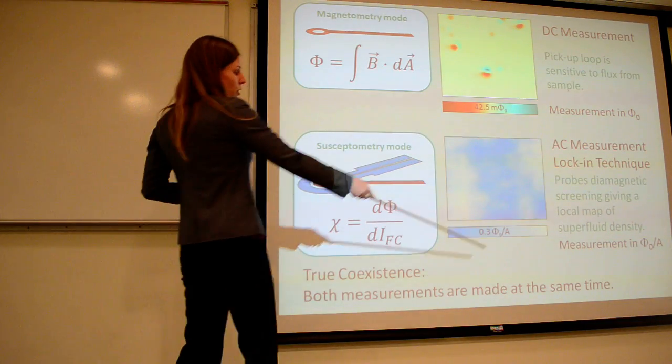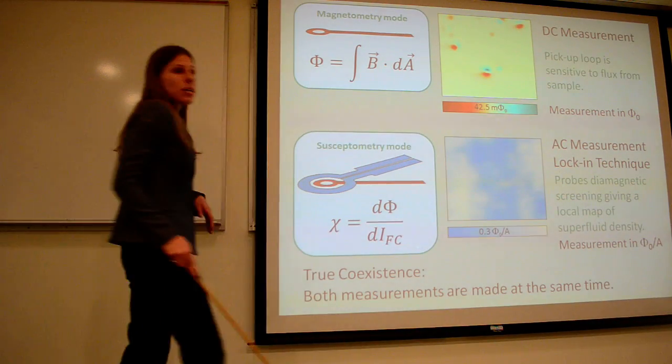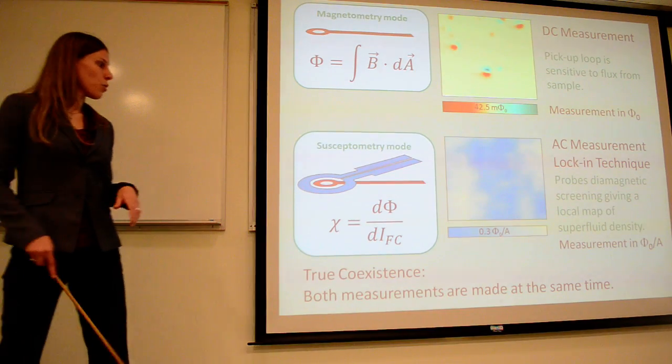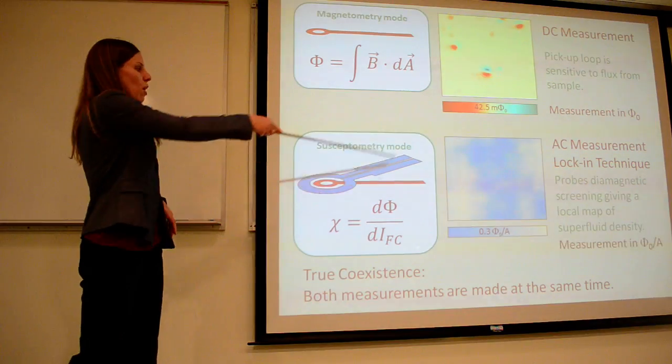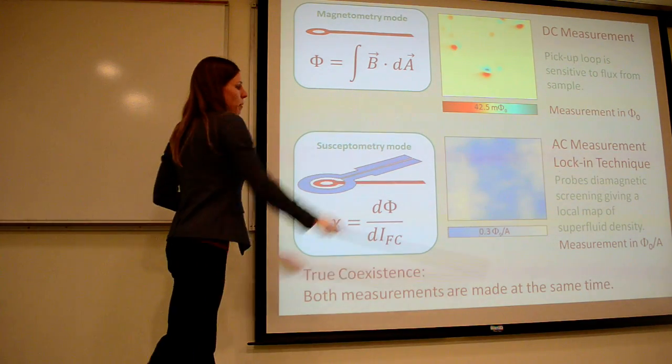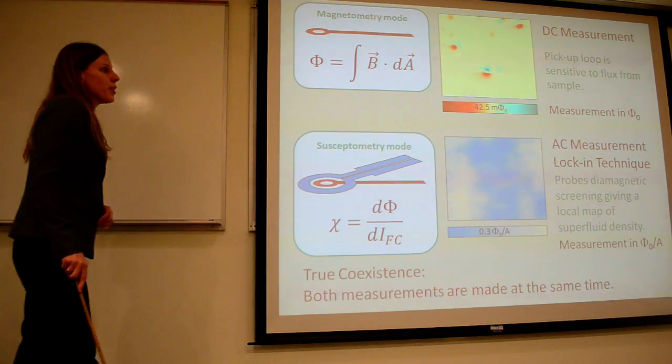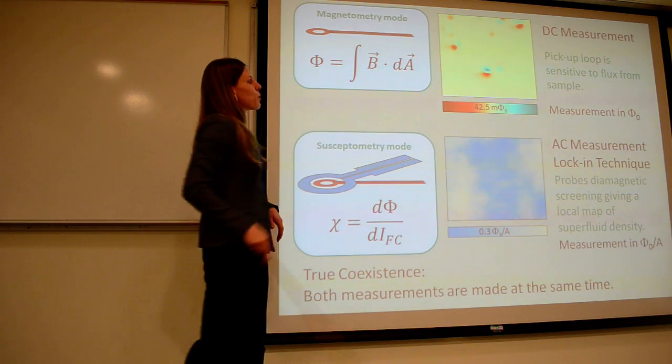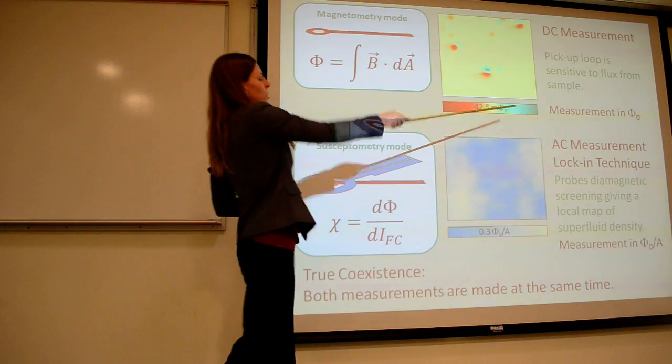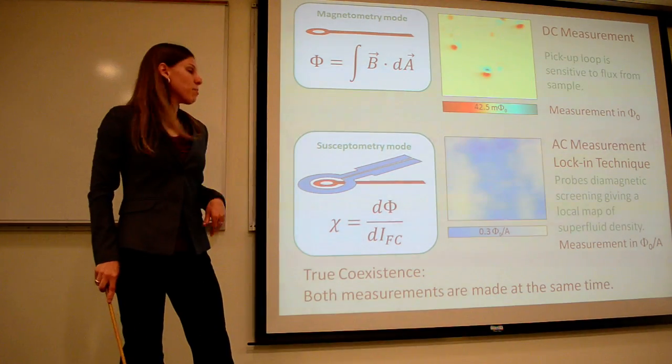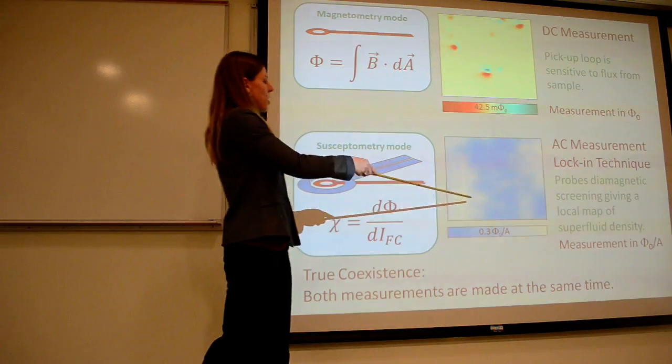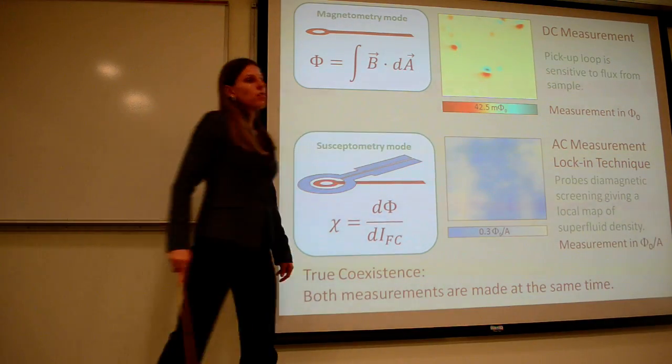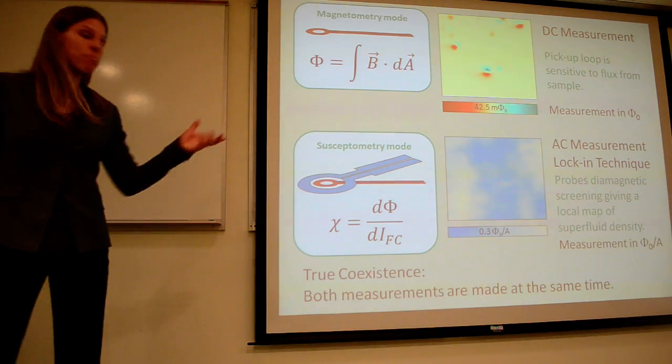The units for susceptibility are going to be in phi naught per amp because the signal that is responding is always going to be proportional to the driving current. So we've normalized all of these by the current. So in the future, well, the color scales for magnetometry are always going to be this red, green, blue, or this red, yellow, green. And for susceptibility are going to be blue, tan, and red. But you can also look at the units to know which mode we're working in.